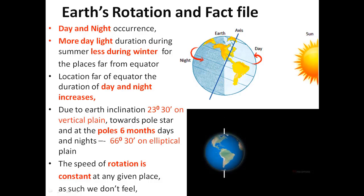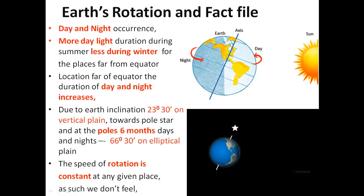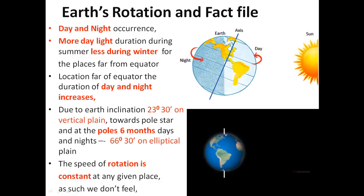Earth's rotational direction is always west to east, and the axis is always pointing toward the Pole Star. The speed of rotation is constant throughout at any given place, and as such we don't feel it.